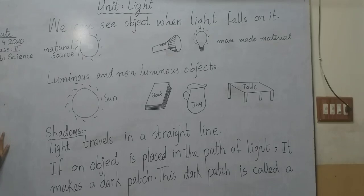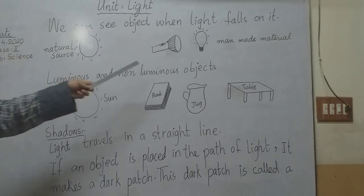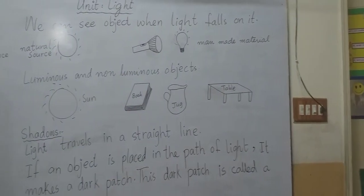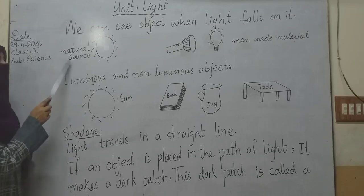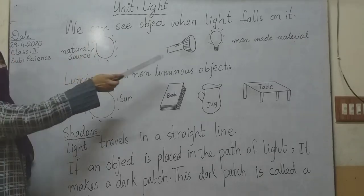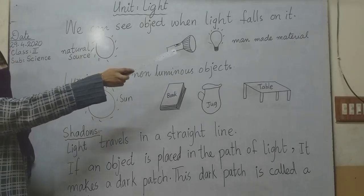If there is no light, we cannot see objects. Some sources are natural sources, and some are man-made materials. We get light from various sources. Some are natural, and some are man-made materials.